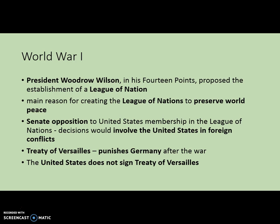The Treaty of Versailles is the treaty that ends the war, but the other European powers were more interested in punishing Germany than preserving world peace. They forced Germany to cut the size of their military and pay huge war reparations to the Allies. This really just angered Germany and pushed us closer to another world war. The United States was actually the only country that did not sign the Treaty of Versailles — the Senate wouldn't allow it.